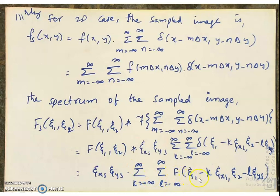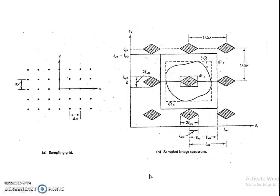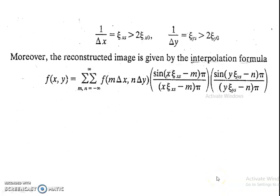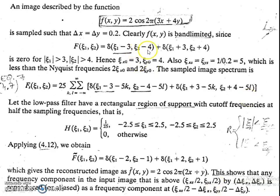In the given sampling scenario, ζxs = 1/Δx = 1/0.2 = 5 and ζys = 1/Δy = 1/0.2 = 5. Since ζxs should be at least 6 and ζys should be at least 8, this is definitely an undersampling case. The spectrum of the sampled image is 25 × summation over k, l of [delta(ζ₁ − 3 − 5k, ζ₂ − 4 − 5l) + delta(ζ₁ + 3 − 5k, ζ₂ + 4 − 5l)]. The baseband spectrum corresponds to k = 0, l = 0, giving delta(ζ₁ − 3, ζ₂ − 4) plus delta(ζ₁ + 3, ζ₂ + 4).